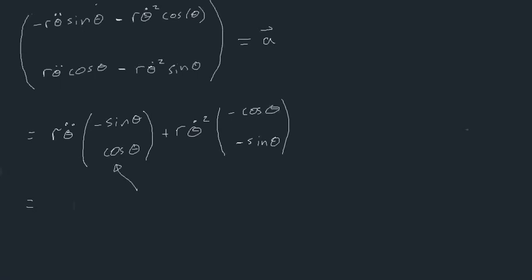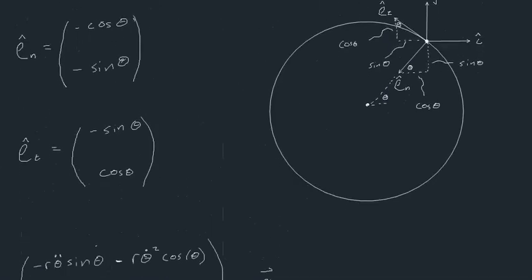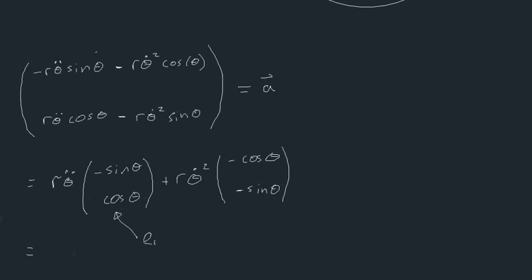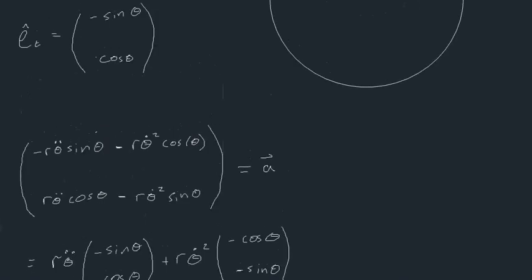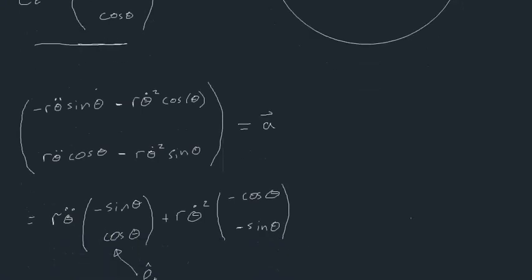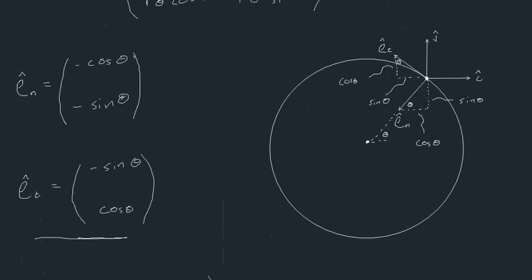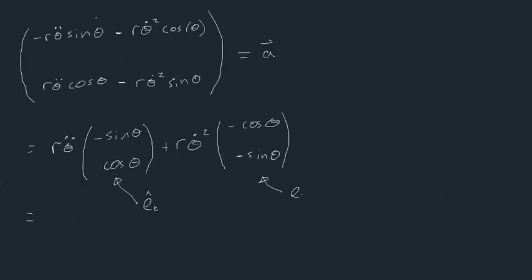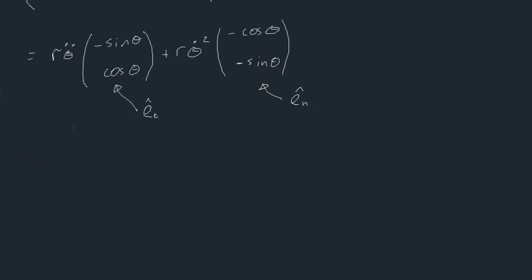Looking at those factored terms: (minus sinθ, cosθ) is exactly eₜ as we proved earlier, and (minus cosθ, minus sinθ) is exactly eₙ. So we can replace both, and our acceleration vector becomes r·θ̈ times eₜ plus r·θ̇² times eₙ-hat.